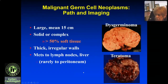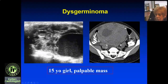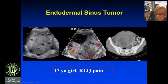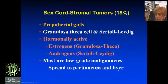A couple of examples: a 15-year-old girl with a palpable mass in the pelvis, only one ovary visible — this is an ovarian mass, predominantly solid — turned out to be a dysgerminoma. A 17-year-old girl with right lower quadrant pain: big mass, predominantly solid, a few cystic or necrotic areas, some internal flow. Given the age, it comes from the ovary; it's solid, so it's a germ cell tumor — this was an endodermal sinus tumor.